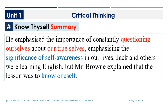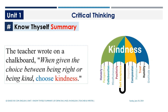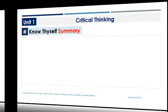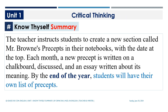Jack and others were learning English, but Mr. Brown explained that the lesson was to know oneself. The teacher wrote on the chalkboard: 'When given the choice between being right or being kind, choose kindness.' The teacher instructed students to create a new section called 'Mr. Brown's Precepts' in their notebooks, with the date at the top. Each month, a new precept is written on the chalkboard, discussed, and an essay written about its meaning.